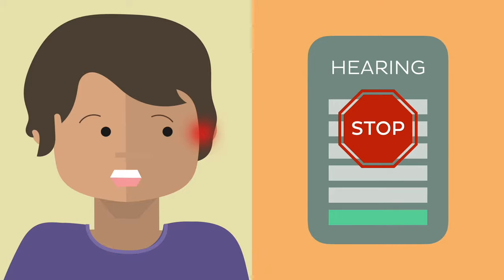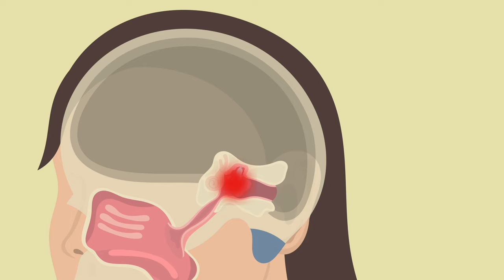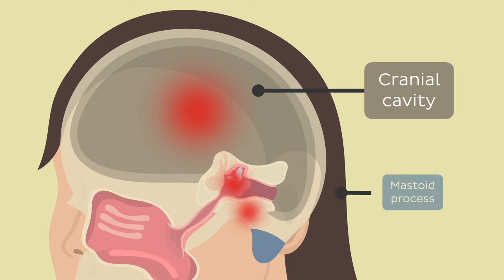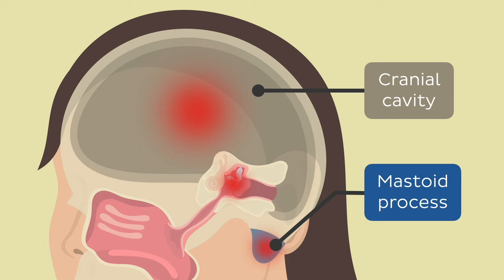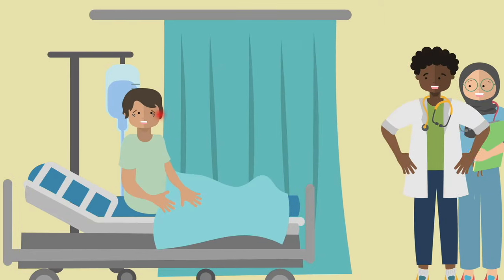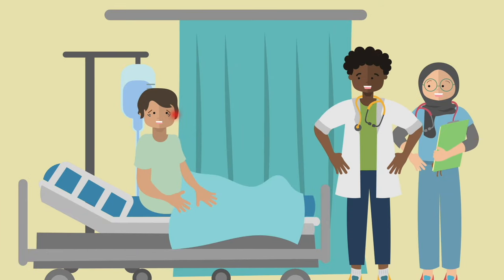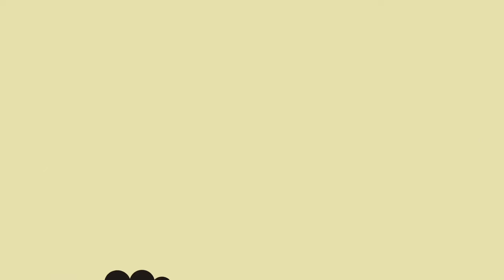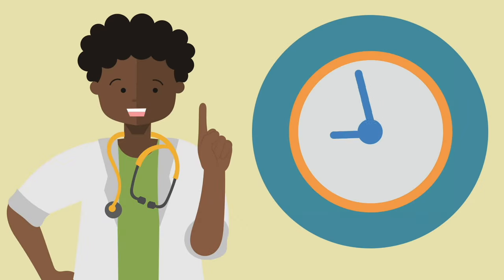Furthermore, the infectious process can sometimes spread to adjacent anatomical regions, such as the cranial cavity and mastoid process, and cause more serious inflammation. Because of these potential complications, it is necessary to monitor the patient until it's certain that the disease is resolved. Monitoring will also allow experts to adjust the therapy in a timely manner if necessary.